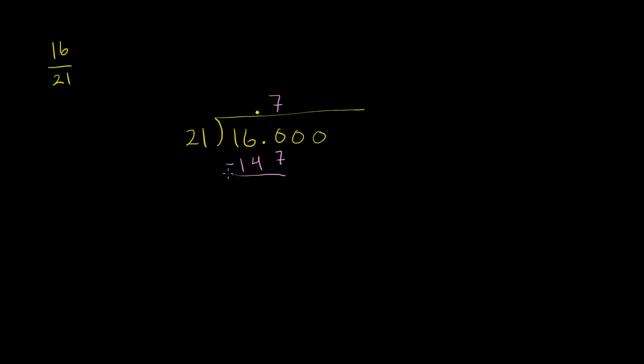And then when we subtract, we should get a remainder less than 21. If we pick the largest number that goes into 160, where if I multiply it by 21 I get close to 160 without going over. And so if we subtract, we get 13. So that worked. 13 is less than 21.